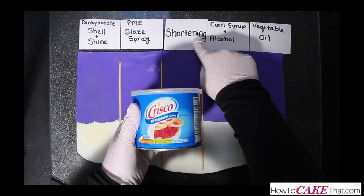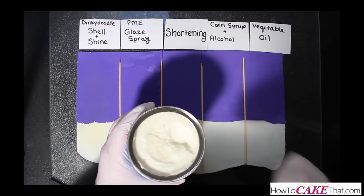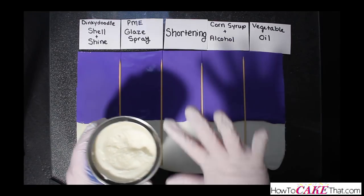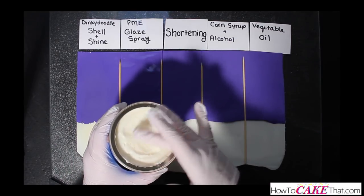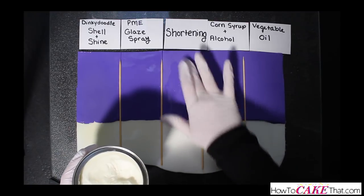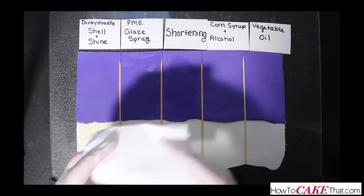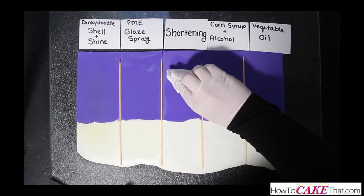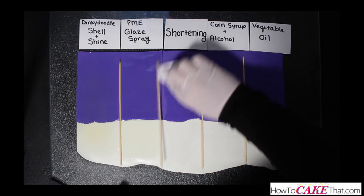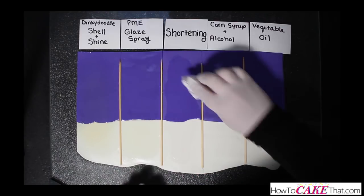The next product I am using is plain old Crisco vegetable shortening. To apply it to the fondant you can either brush it on with a paintbrush or wear food safe gloves and use your fingers to rub it on. Once I have a nice even coat, I like to use a paper towel to buff away any excess shortening to give it a smooth finish.